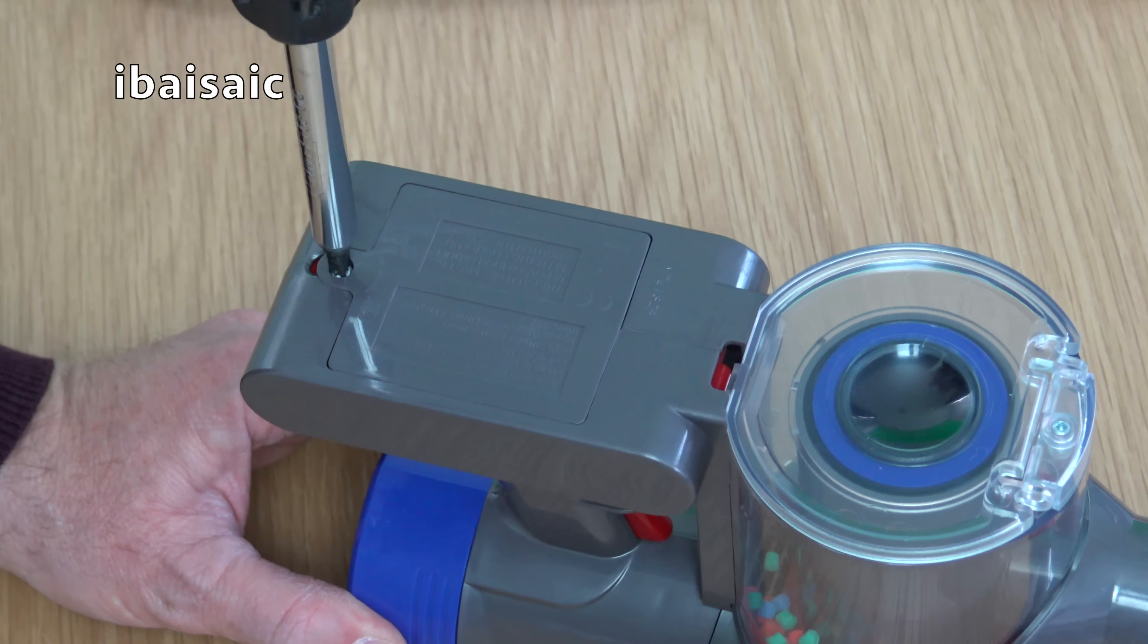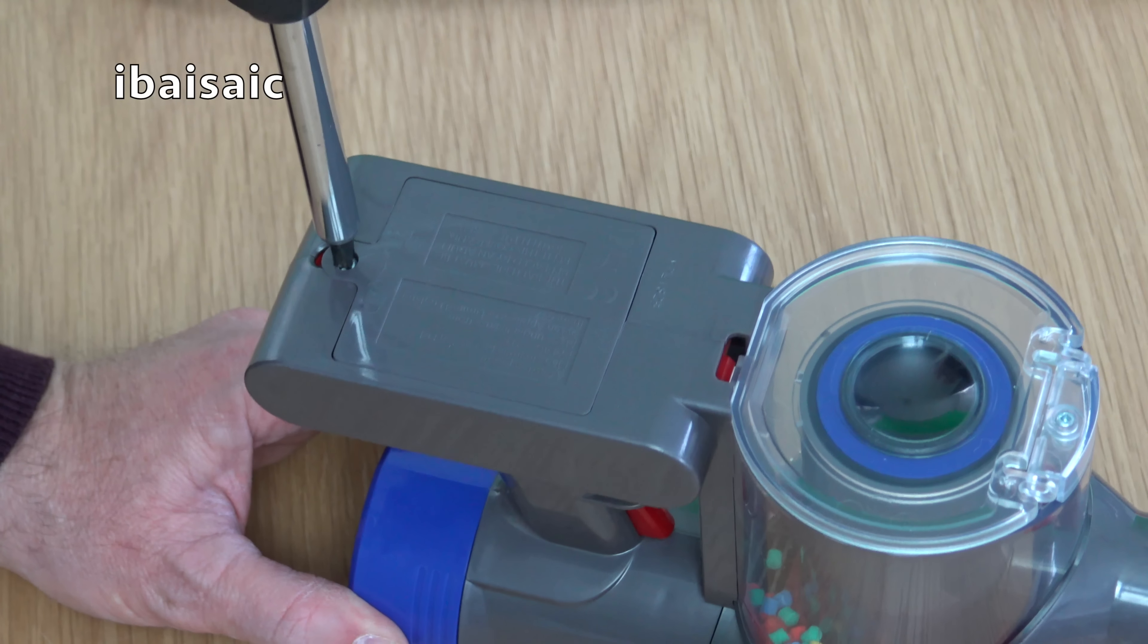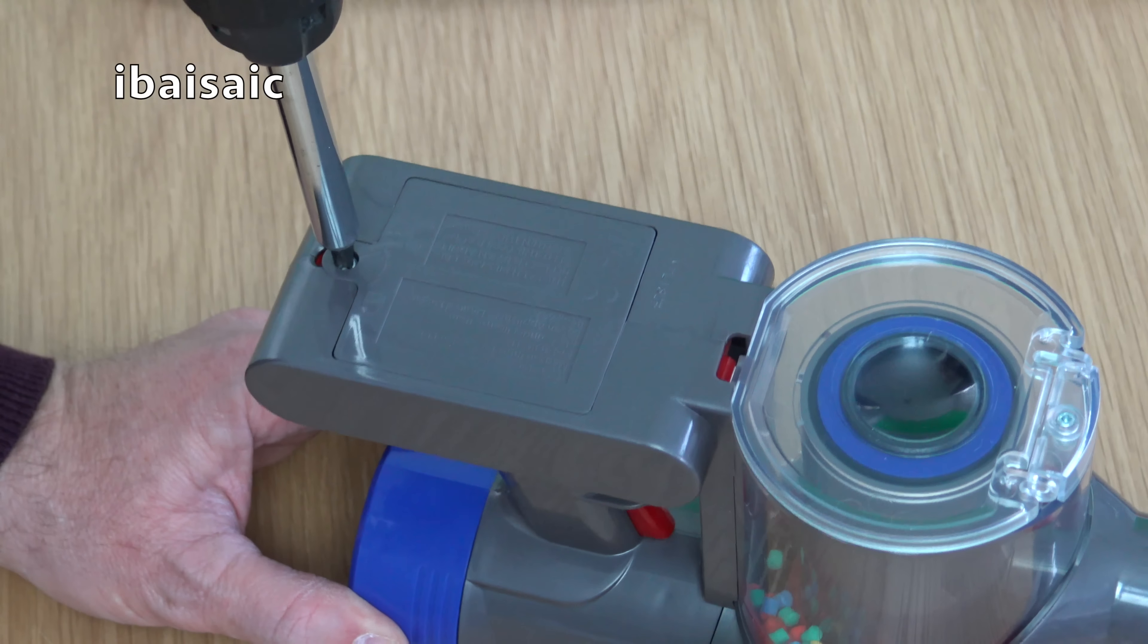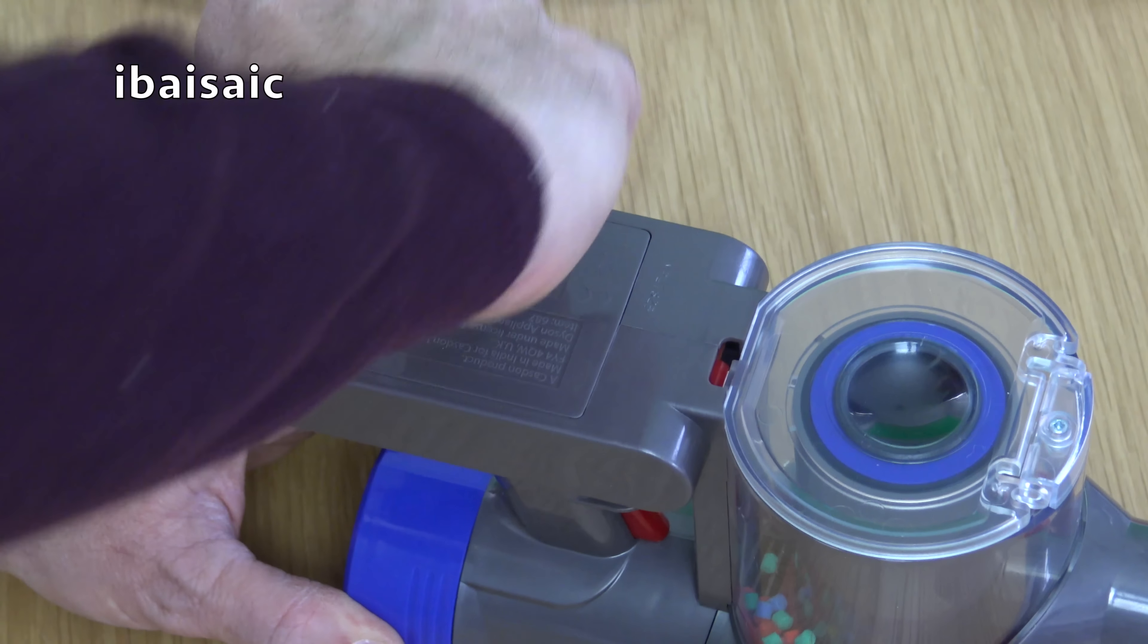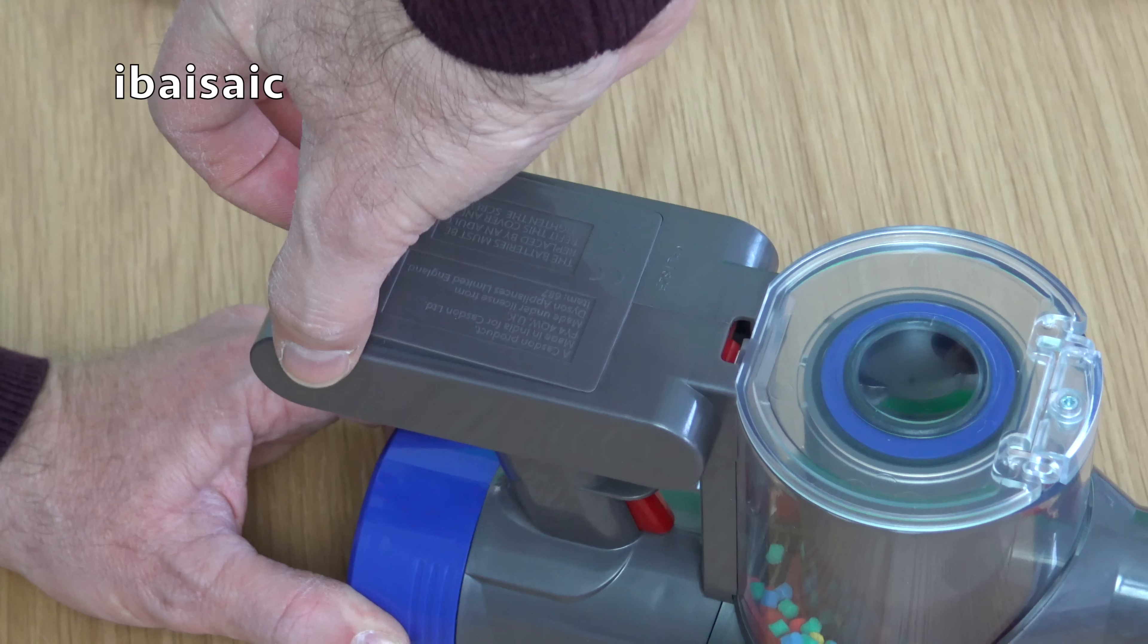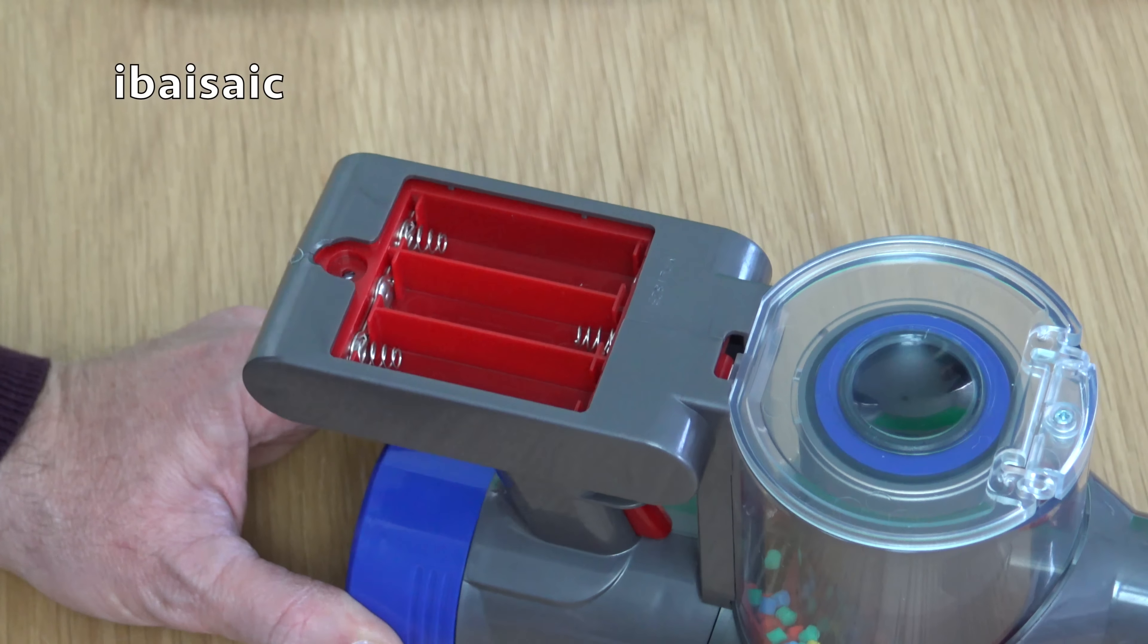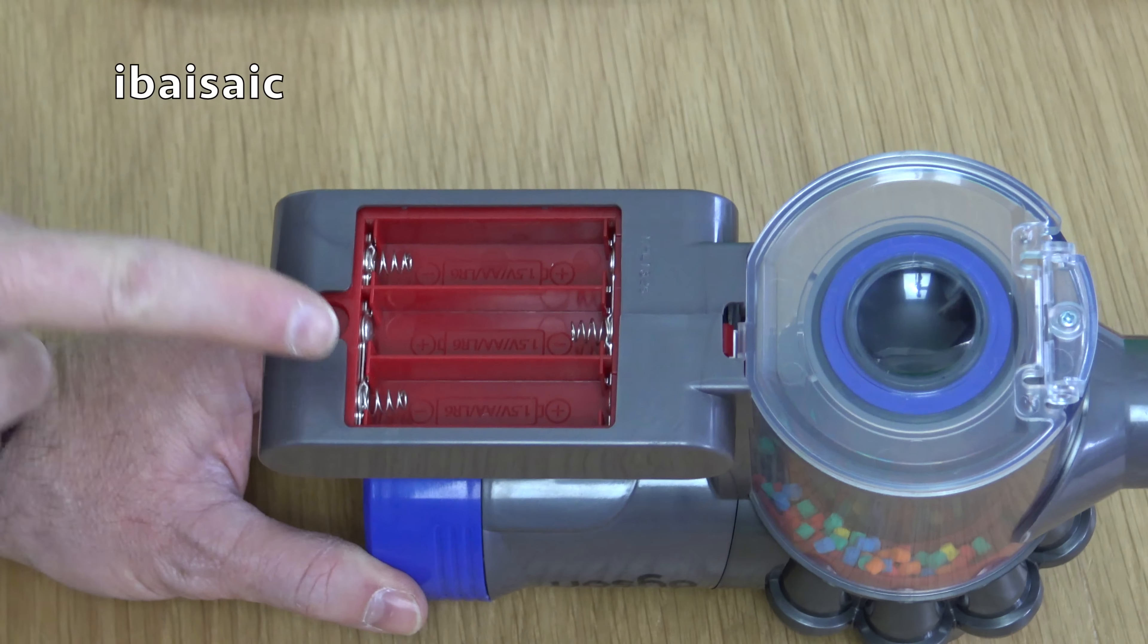Okay, so just need to undo this screw so we can remove the cover for the battery compartment. That should be enough. And just get my fingernail into there. There we are. So now we've got to put the batteries in.